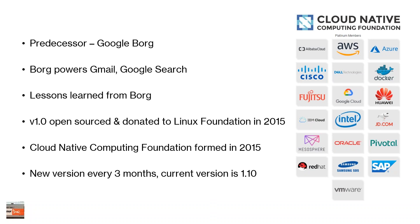In 2015, Kubernetes was released as version 1.0, open sourced and donated to the Linux Foundation. At that time, the Cloud Native Computing Foundation (CNCF) was formed to look after containers in the Linux world. There is a huge number of very large enterprise companies that are platinum members of the CNCF — from Docker and Mesosphere to Oracle, Dell, AWS, and Azure. Kubernetes releases a new version every three months; they're currently at version 1.10.